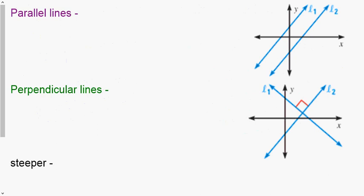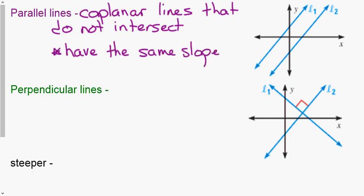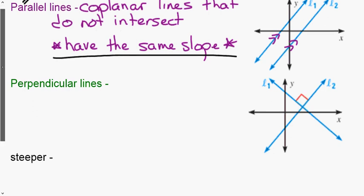Parallel lines are coplanar lines that do not intersect. The key fact we need: parallel lines have the same slope. In geometry you may see a double-arrow symbol drawn on lines to show they are parallel, and the symbol for parallel is two backslashes.